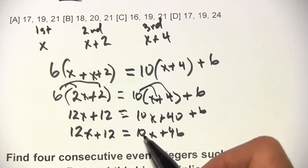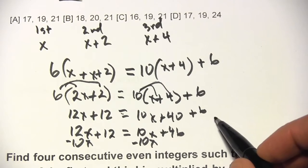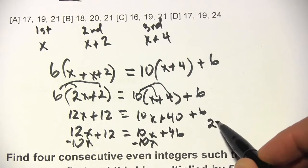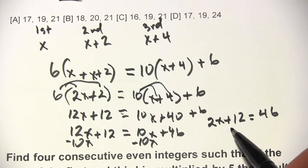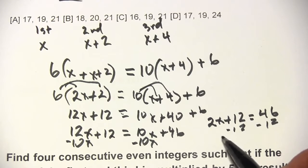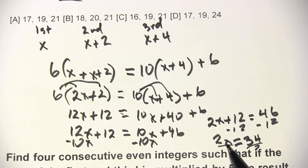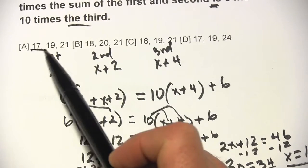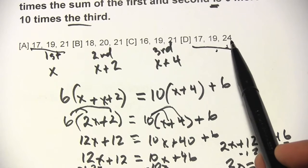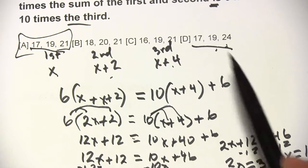We have x's on both sides of the equation, so we subtract 10x from both sides — that gets rid of the x's on the right. So we get 12x minus 10x, which is 2x plus 12, equals 46. Then we subtract 12 from both sides to get 2x equals 34. Dividing both sides by 2 gives x equals 17. Looking back at the answer choices, it should be 17, 19, 21 — that's exactly what we have in answer A.